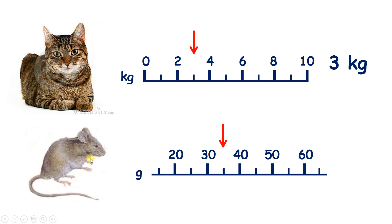And the mouse is much lighter than the cat, so we can measure the weight of the mouse in grams. And this scale is a bit more difficult to read. We know that the arrow is pointing between 30 and 40, but there are a lot of numbers between 30 and 40. So how do we find out how much the mouse weighs?